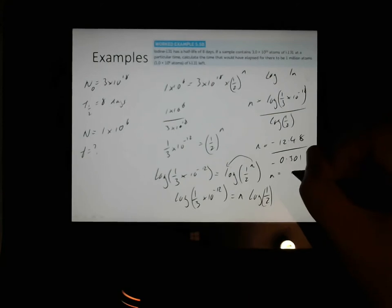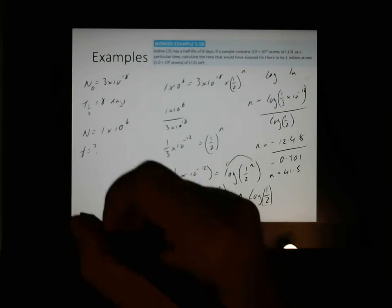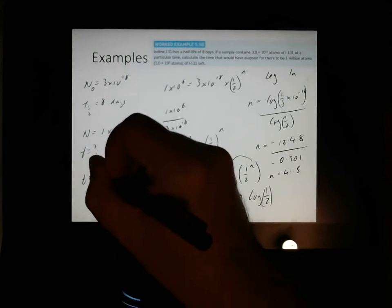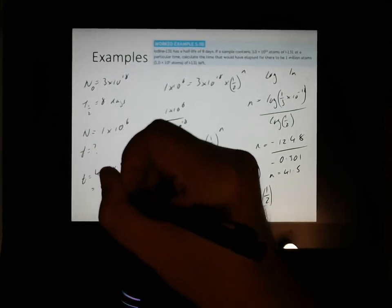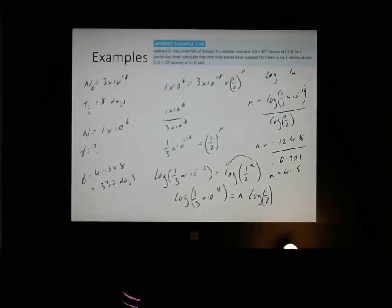I'll check that in now. So, log of 1 over 3 times 10 to the negative 12. The log of that gives me N equals negative 12.48 divided by... So, if you put that top line into your calculator, that's the answer you get. Log of a half, negative 0.301, 12.48 divided by 0.301, N equals 41.5 approximately. So, 41.5 half-lives. We know 1 half-life is equal to 8 days. So, 41.5 times 8. T equals 41.5 times 8 equals 332 days, or quite close to 1 year.